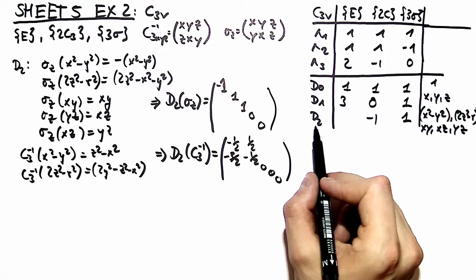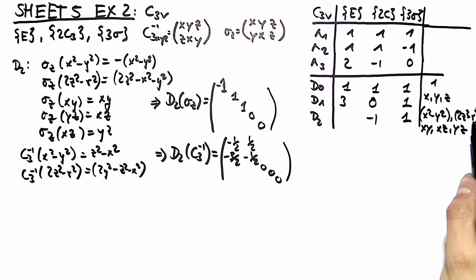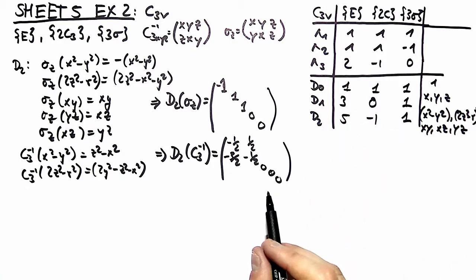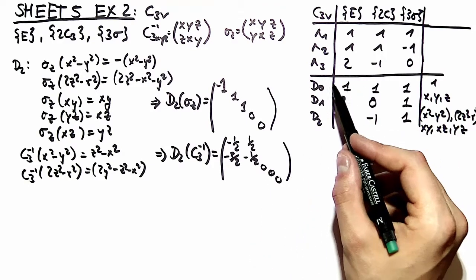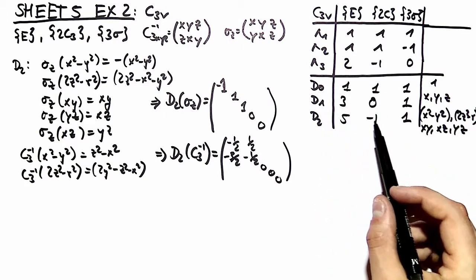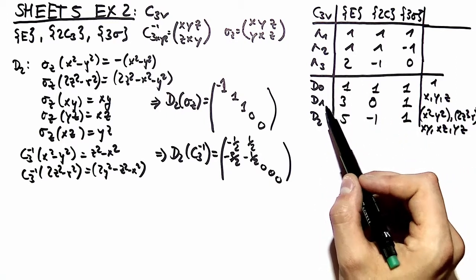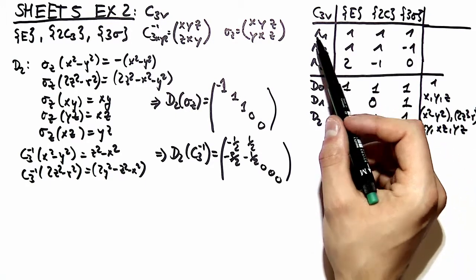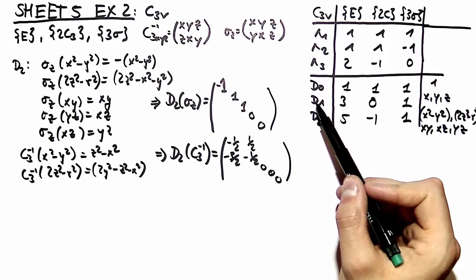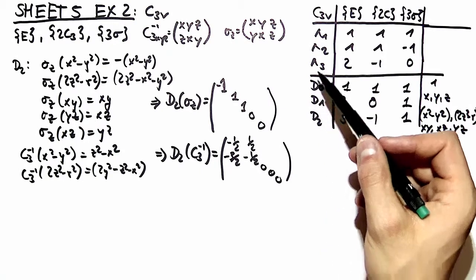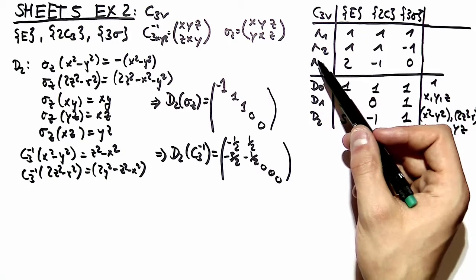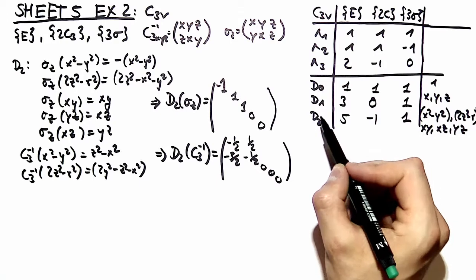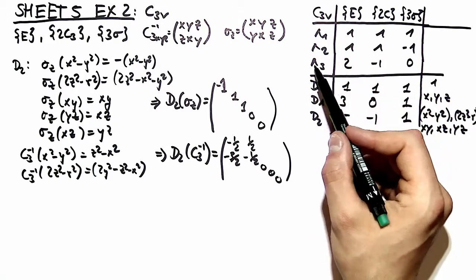The dimensionality of d2 is 5 dimensional because we have 5 basis vectors. So what we have now is the characters of our representations d0, d1 and d2. d0 is nothing else than lambda 1. With the decomposition theorem you can see that d1 is lambda 1 plus lambda 3. And with the decomposition theorem you can deduce that d2 is lambda 1 plus 2 times lambda 3.